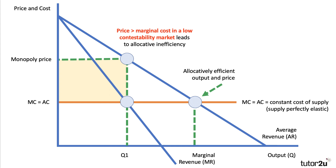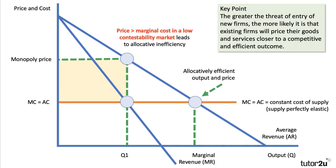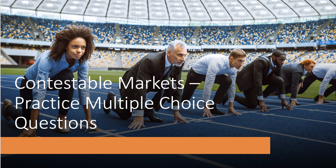You could also develop this analysis by showing what happens to consumer surplus in a contestable market — we might do that in a future analysis video. Key point: the greater the threat of entry of new firms, the more likely it is that existing firms will price their goods and services closer to where price equals marginal cost — the competitive and allocatively efficient outcome. So this could be a situation where contestability does lead to economic efficiency. In the final video, we're going to go through just a handful of interesting multiple choice questions to test your understanding of contestable markets.